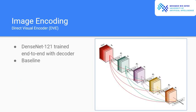First one is a direct visual encoder. It's basically a DenseNet-121 model, trained end-to-end with the decoder. We chose this backbone because this was the most common backbone used in a lot of works. This acts as a baseline for our studies.